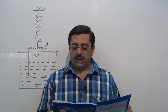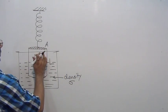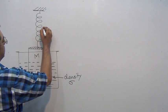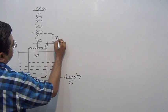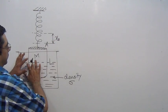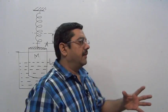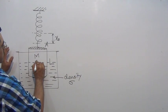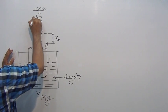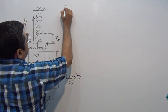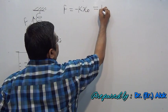The extension X naught of the spring when it is in equilibrium - in the equilibrium condition, what is the extension created? In case if the liquid is not there, the cylinder is not immersed in the liquid, then what is the concept? Weight of this cylinder vertically downward Mg is balanced by the restoring force of the spring. It is equal to Mg.